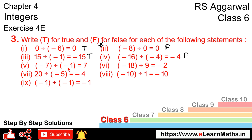Let's do the next part. Next part: minus seven divided by minus one gives seven. Minus seven divided by minus one — minus and minus cancel, so obviously seven comes. Hence this statement is TRUE.